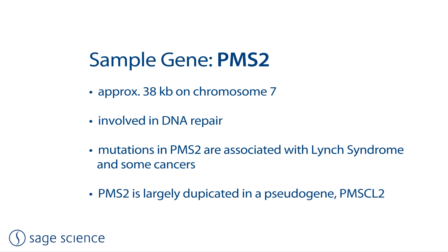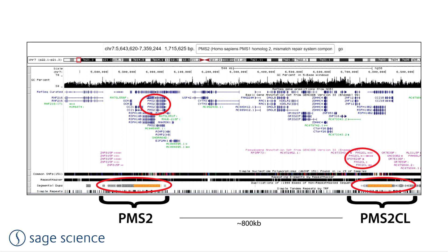PMS2 is a 38KB gene located on chromosome 7 and is involved in gene repair. Mutations in PMS2 have been associated with Lynch syndrome and some cancers. A large portion of PMS2 is duplicated about 800KB further away on the chromosome, within a pseudogene, PMS2CL. This presents difficulties for sequence analysis of PMS2 using standard target enrichment techniques. HLS Catch can be used to isolate fragments containing the entire PMS2 gene without contamination from PMS2CL.